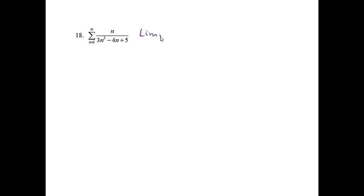Problem 18: the series n over (3n³ minus 4n plus 5). You might want to try the nth term test, but you get an answer of 0, which is inconclusive. I didn't see an easier way to do this other than a comparison, and I don't prefer direct comparison if I don't have to. So I decided limit comparison. If I had n over n³, that reduces to 1 over n squared — I tried 1 over n squared and it worked nicely.